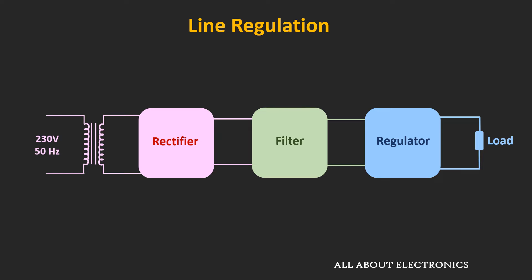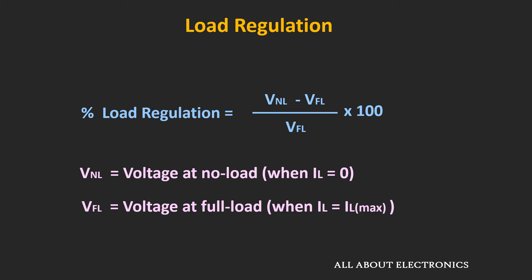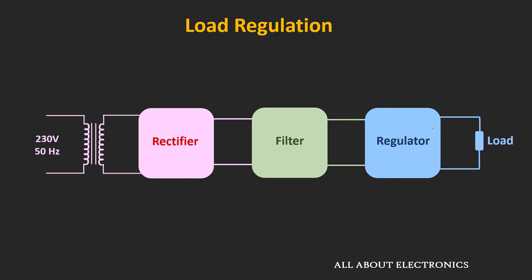The second parameter is load regulation, which defines how a change in the load will affect the output voltage. It is defined as the no-load voltage minus full-load voltage divided by full-load voltage. The no-load voltage is the voltage when no load is connected, or when load current Il equals zero. The full-load voltage is the voltage when load current Il is maximum. For the ideal power supply, load regulation should be zero. For a good power supply, this load regulation should be as minimum as possible.